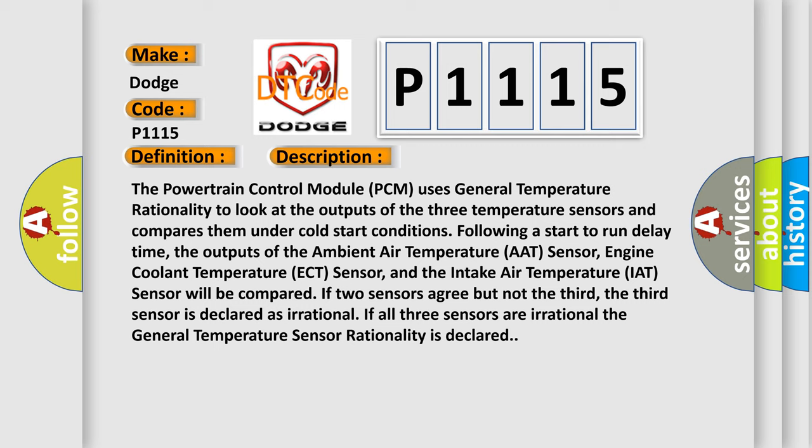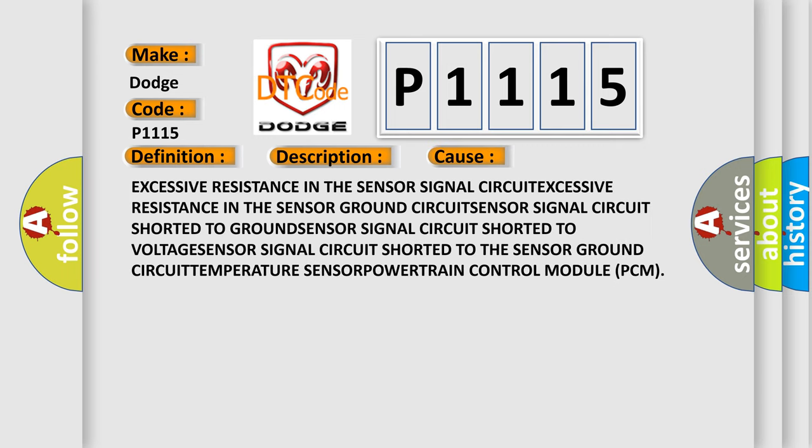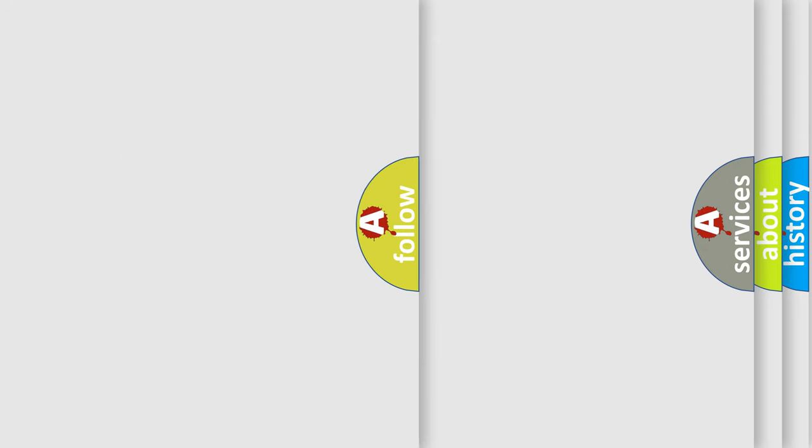This diagnostic error occurs most often in these cases: excessive resistance in the sensor signal circuit, excessive resistance in the sensor ground circuit, sensor signal circuit shorted to ground, sensor signal circuit shorted to voltage, sensor signal circuit shorted to the sensor ground circuit, or a fault in the temperature sensor powertrain control module (PCM). The airbagreset.sk website aims to provide information in 52 languages.